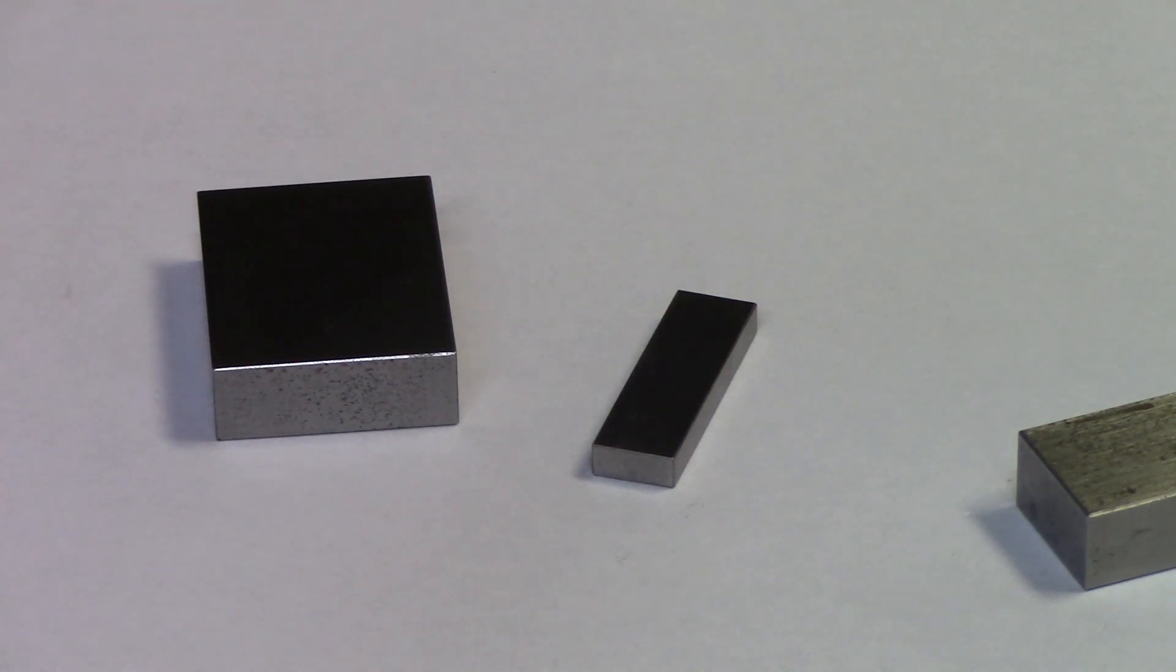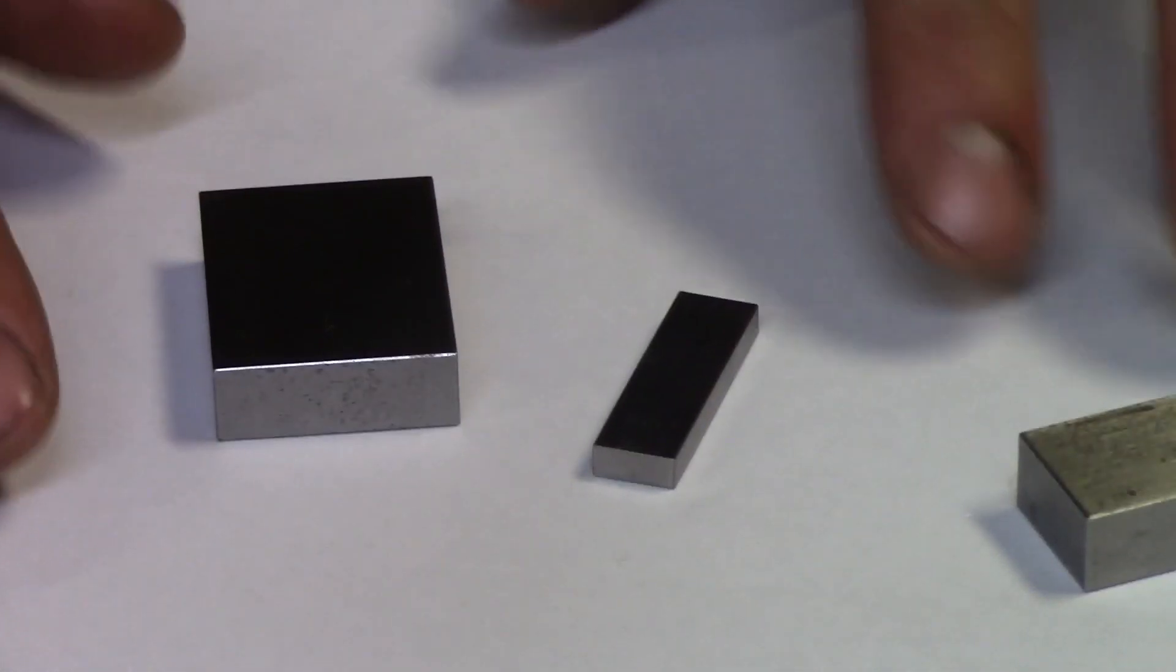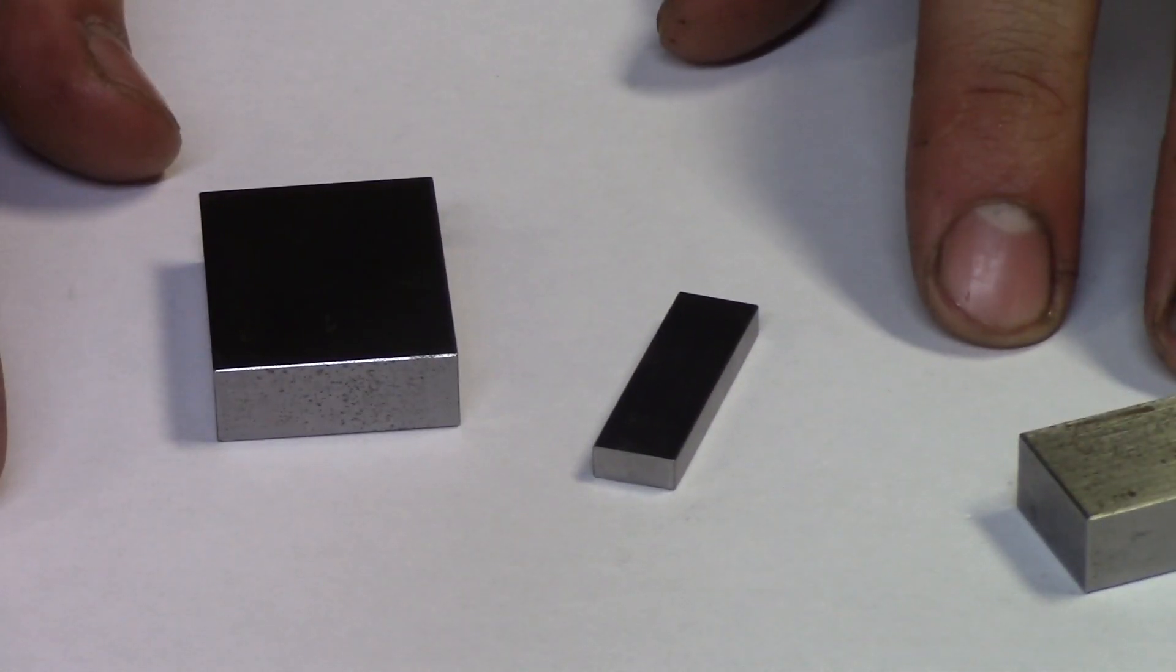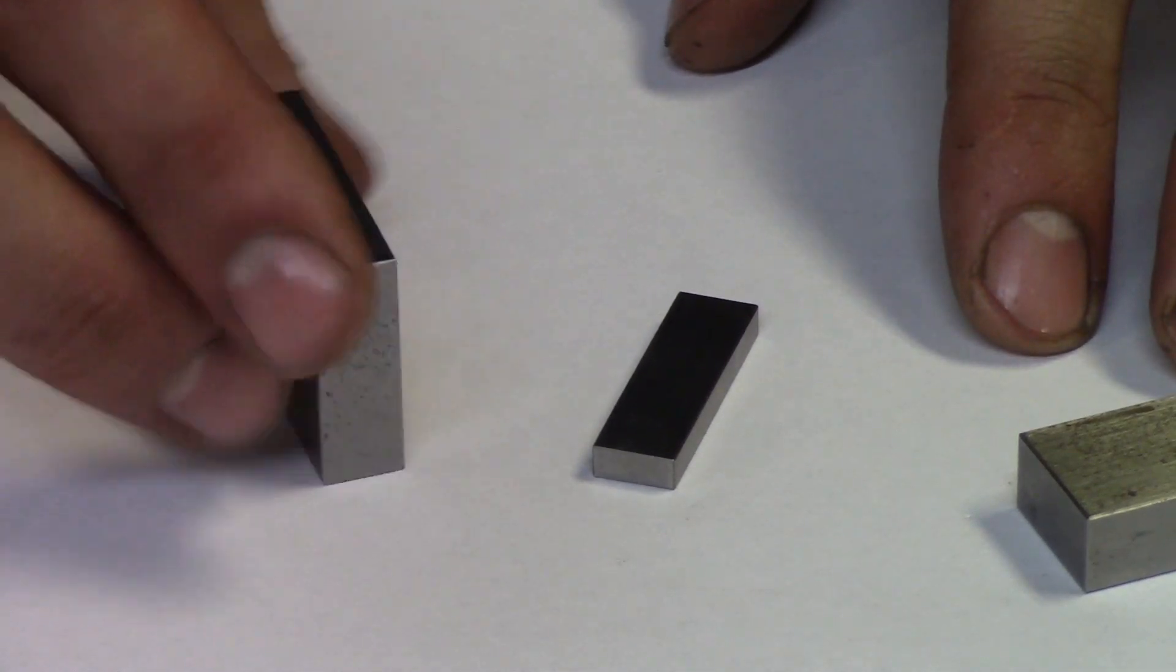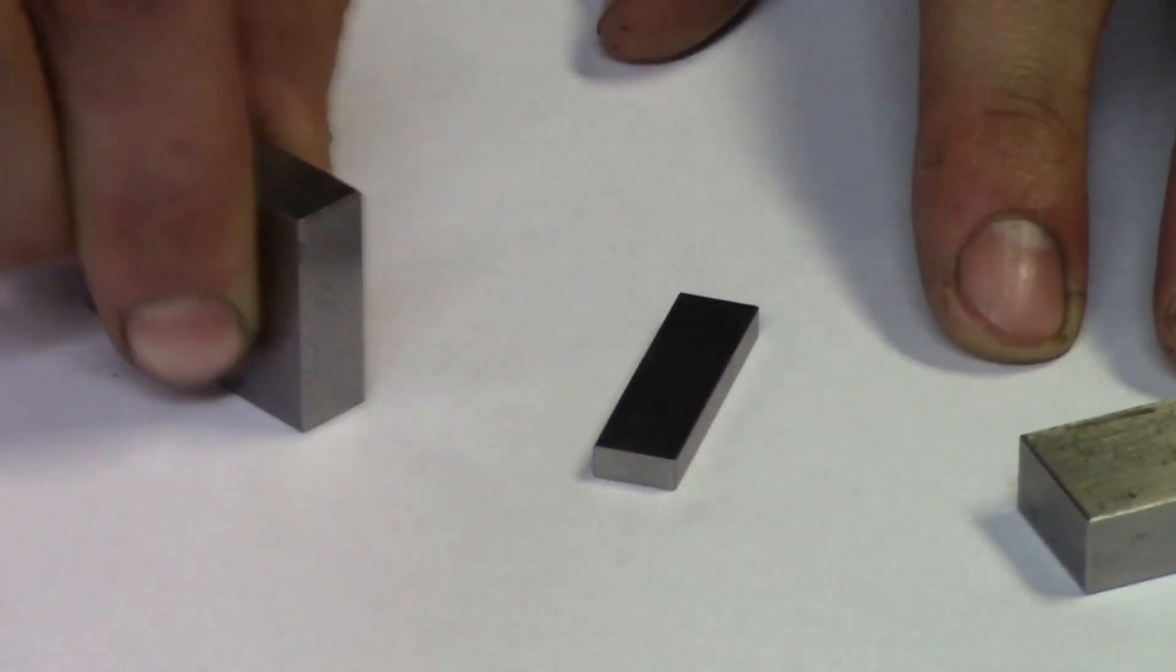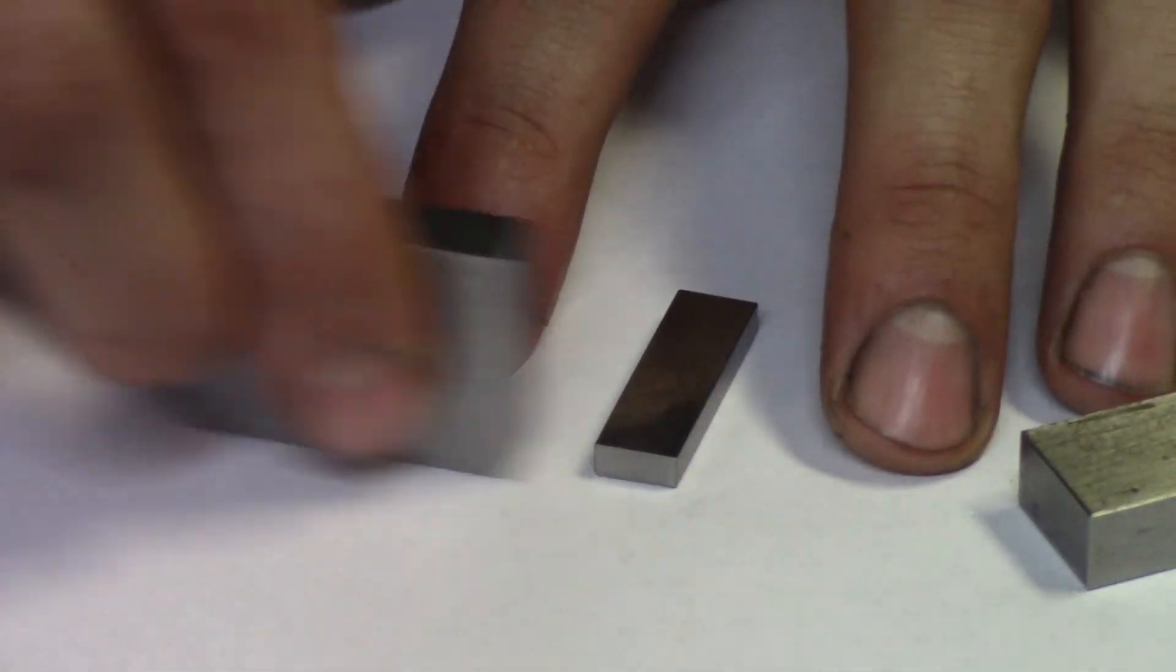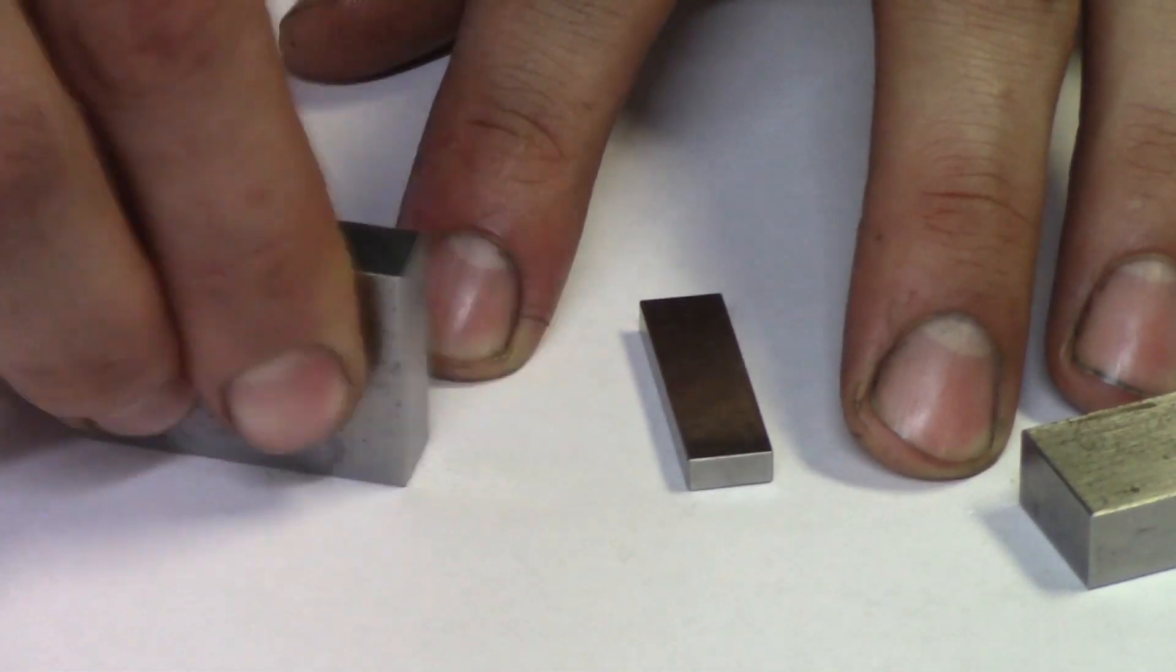First things first, you want to be sure to be very clean. How you are clean is you use a piece of paper, just a standard white piece of paper. You take your gauge block and you just wipe it on the paper. Now you want to be sure to use a flat surface like a surface plate or something under it.